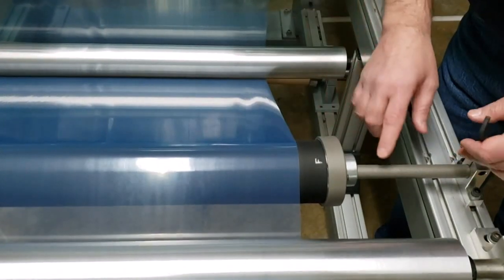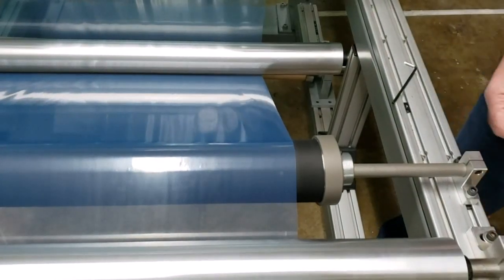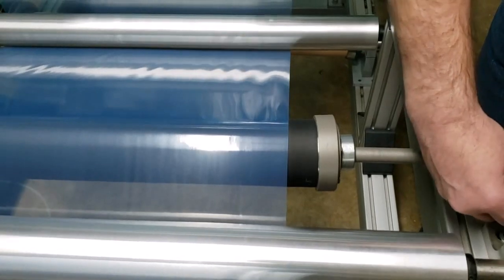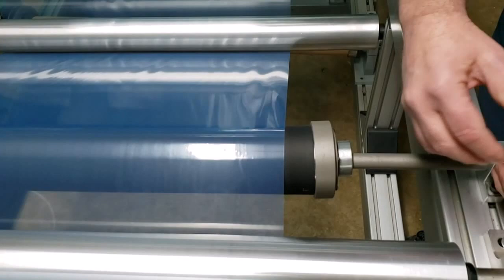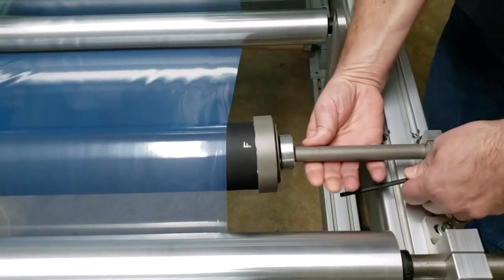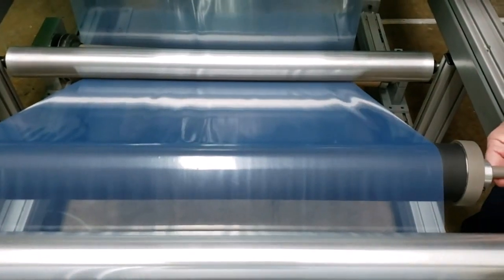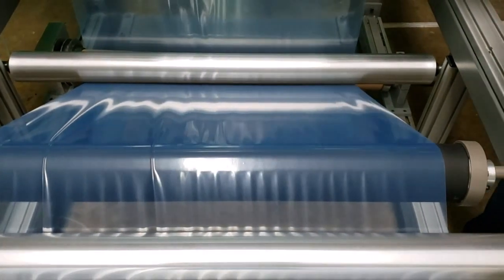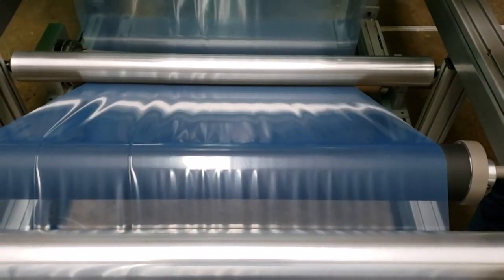Now if I take and I orient this roll backwards, you'll see wrinkles be put into the material. So if I rotate it this way, now all of a sudden it's actually going to put wrinkles into the material. A lot of wrinkles. So what I've done is, I've reversed the action of the roll.